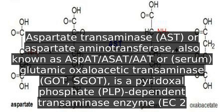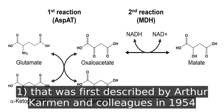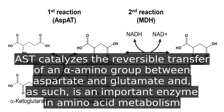Aspartate transaminase, AST, or aspartate aminotransferase, also known as ASPAT, ASAT, AAT, or serum glutamic oxaloacetic transaminase, GOT, SGOT, is a pyridoxal phosphate (PLP) dependent transaminase enzyme, EC 2.6.1.1, that was first described by Arthur Carman and colleagues in 1954.